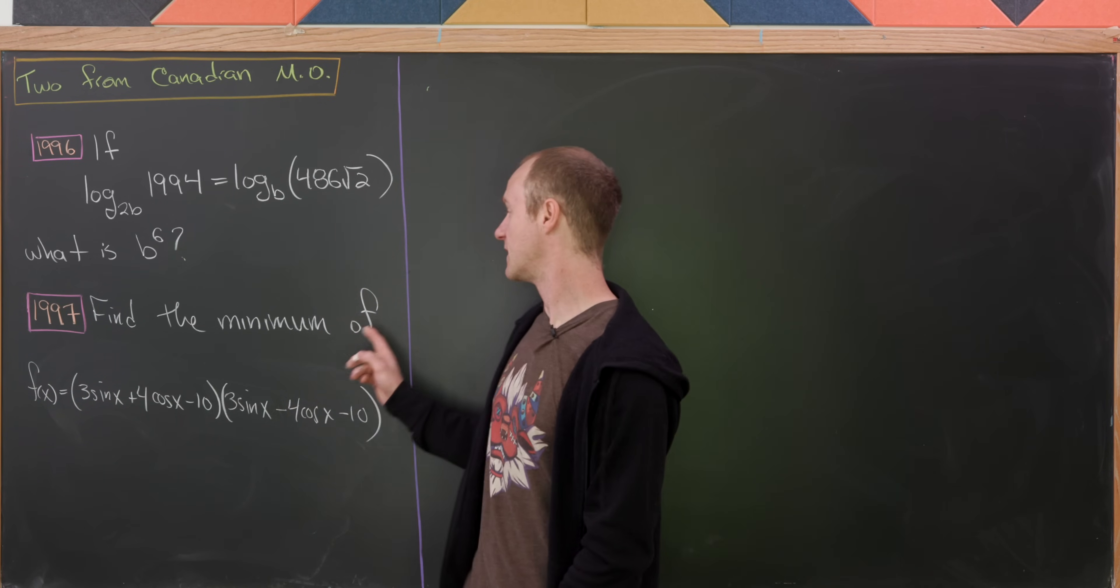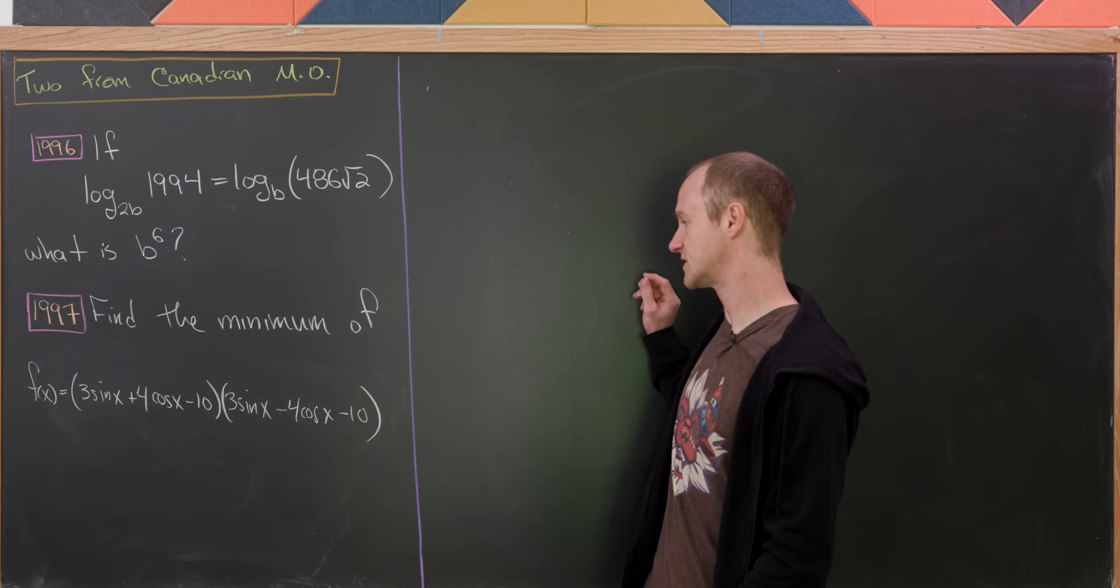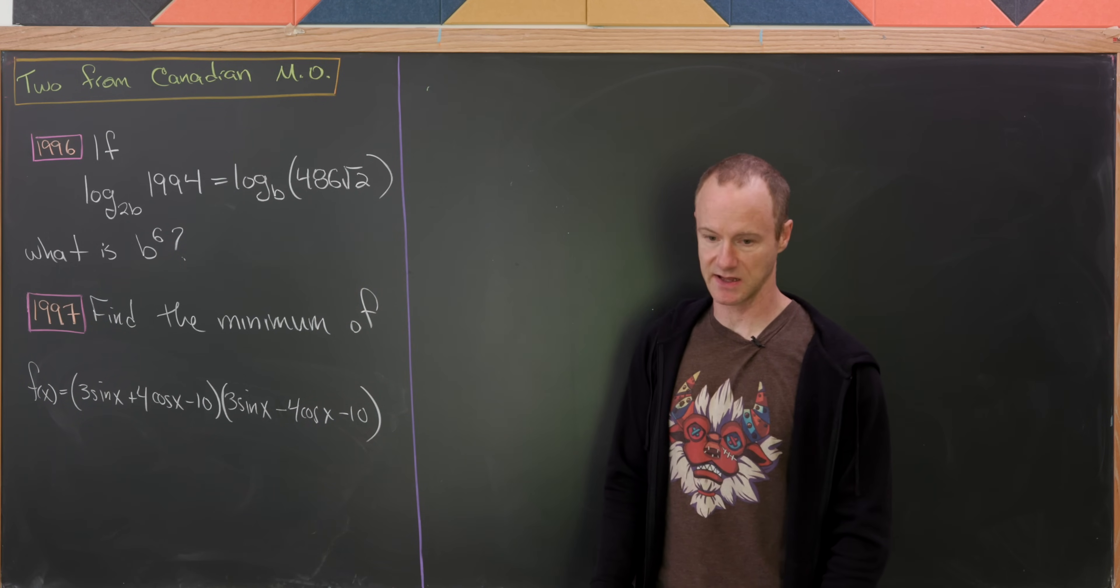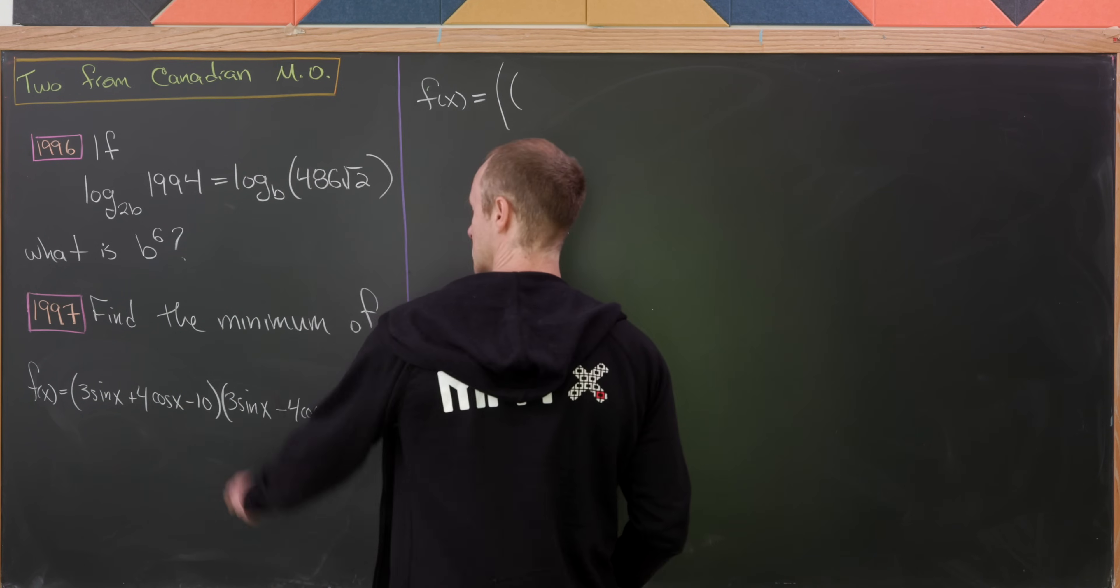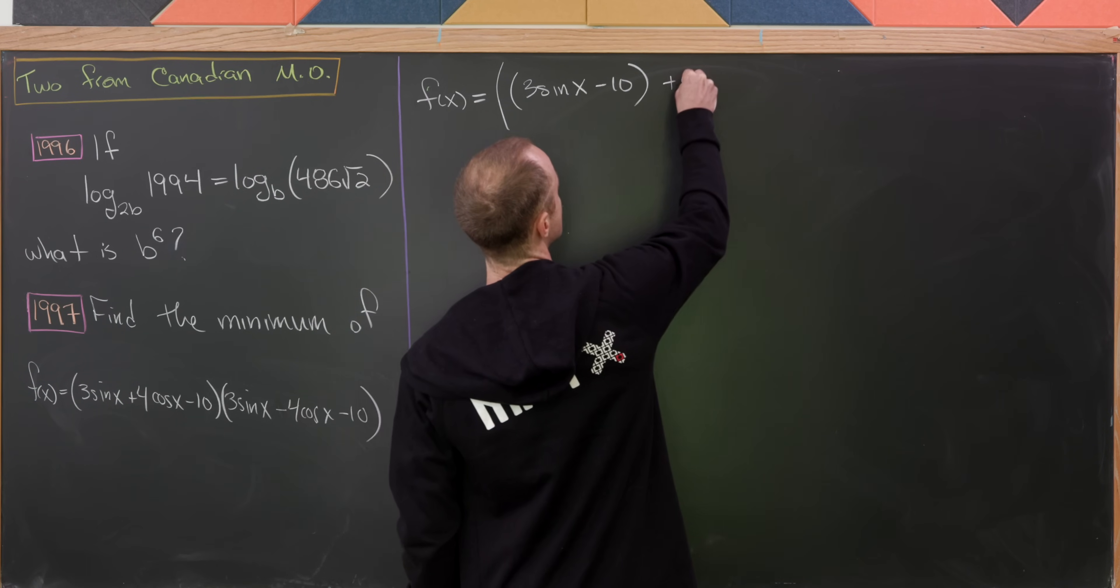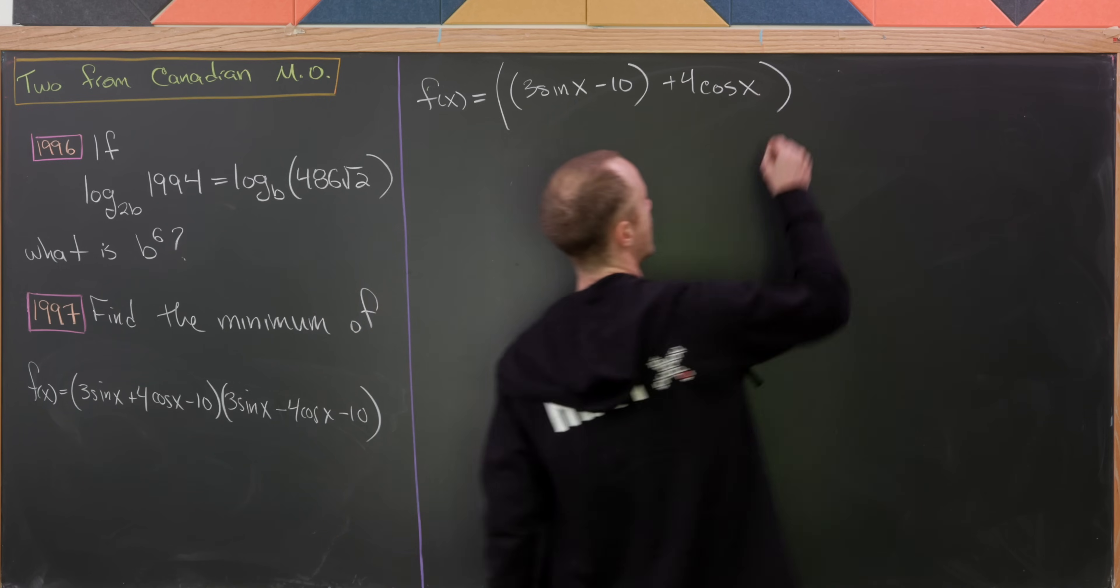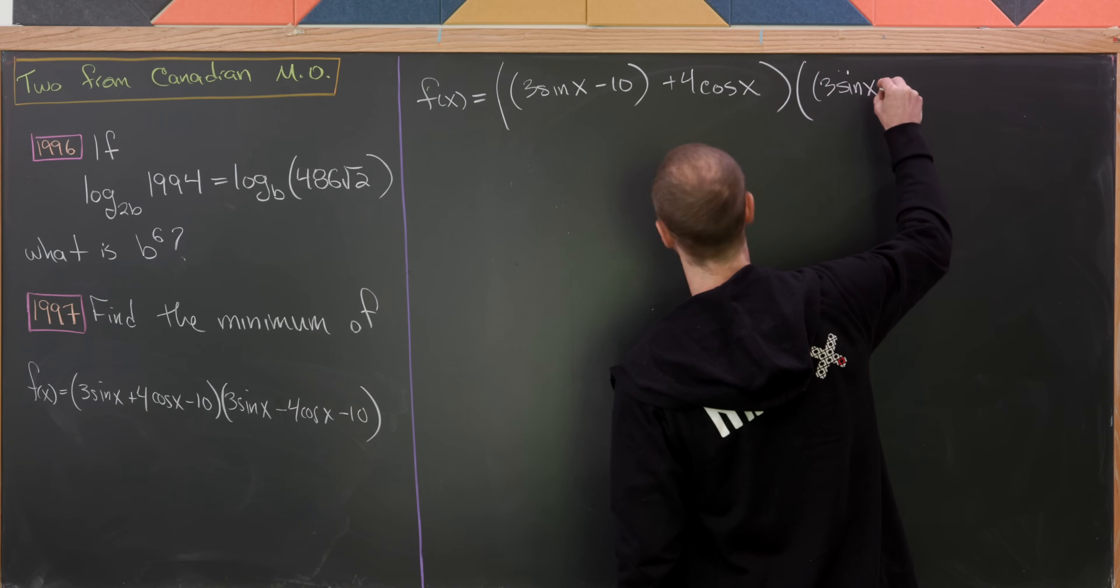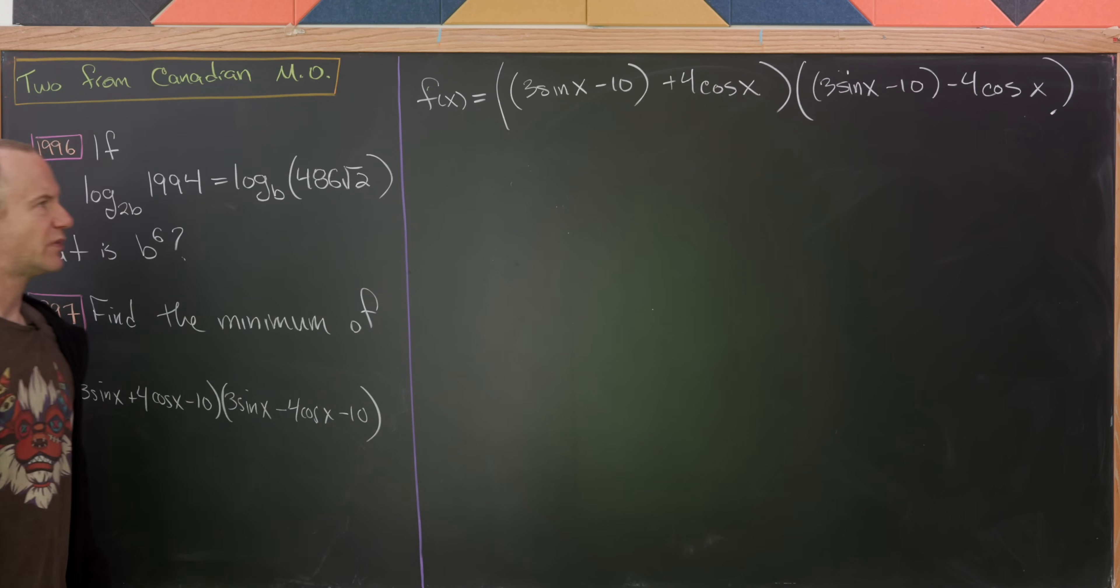Now let's move on to the second, which is to find the minimum value of this function, which is called f of x, which is 3 sine x plus 4 cosine x minus 10 times 3 sine x minus 4 cosine x minus 10. So let's bring that function up here. And as we bring it up here, we're going to rewrite it a little bit. Let's take this first term of the product and rewrite it as 3 sine x minus 10 plus 4 cosine x. And then we'll do the same kind of thing for this second term. We'll have 3 sine x minus 10 minus 4 times cosine x. But now look at what we've got here. We've got something of the form a plus b times a minus b.